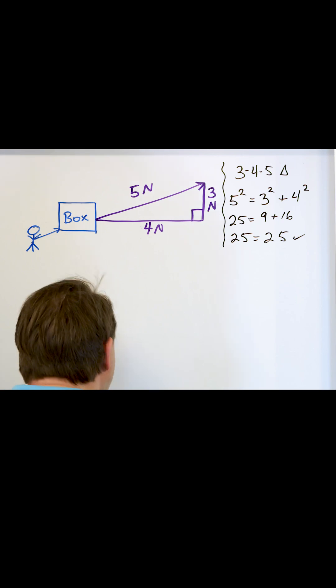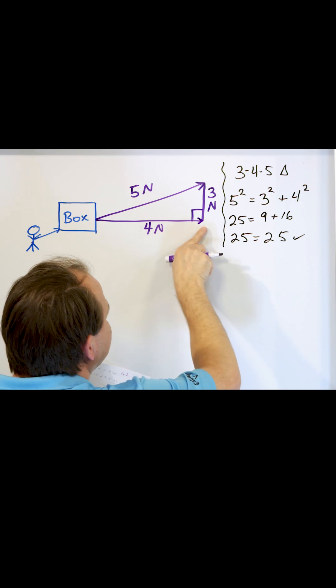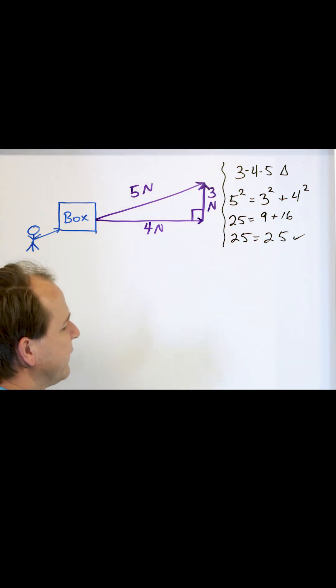In fact, if I wanted to, I could draw this triangle having a little arrowhead right here, because I'm pushing to the right with 4 newtons, and a little arrowhead straight up, pushing up with the amount of 3 newtons.